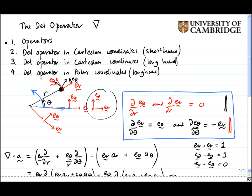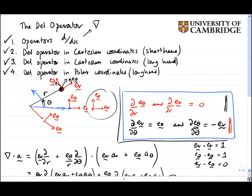To recap: we looked at operators using d/dx as an example, showing its similarity to the del operator. We examined the del operator in Cartesian coordinates using shorthand, showing it's easy to manipulate. We then did it the long way to confirm the same result and show why the shorthand is so useful. Finally, we looked at the del operator in polar coordinates in longhand — which is necessary because in polar coordinates the unit vectors change direction as we move around the field.